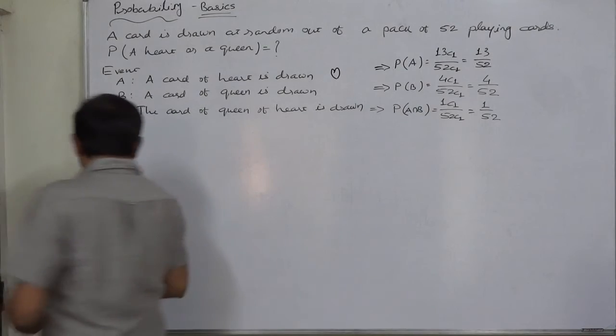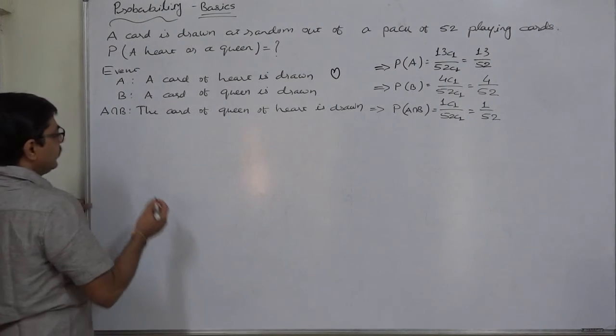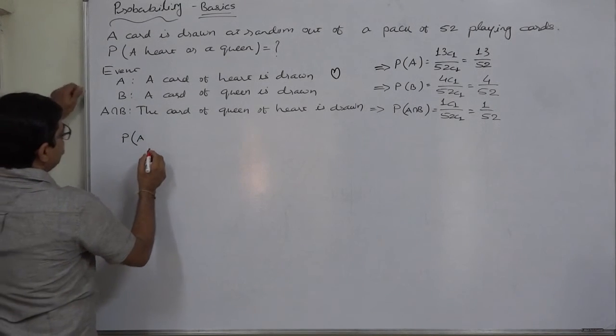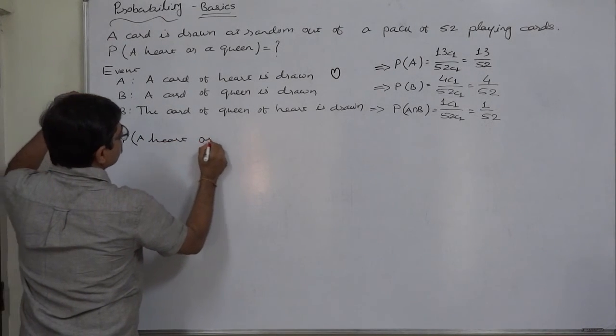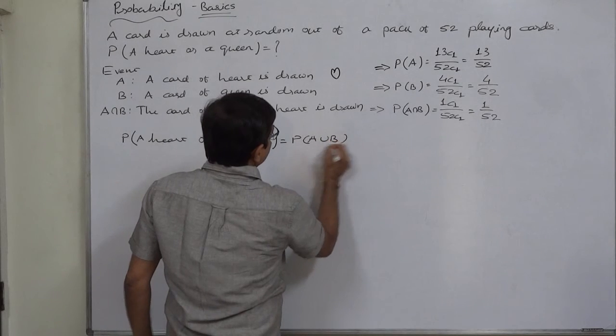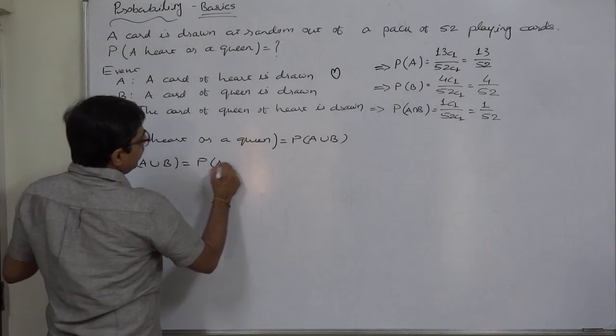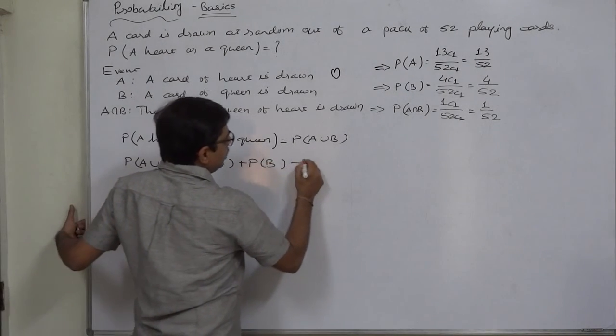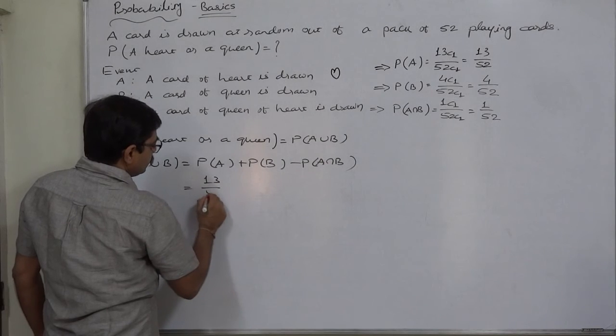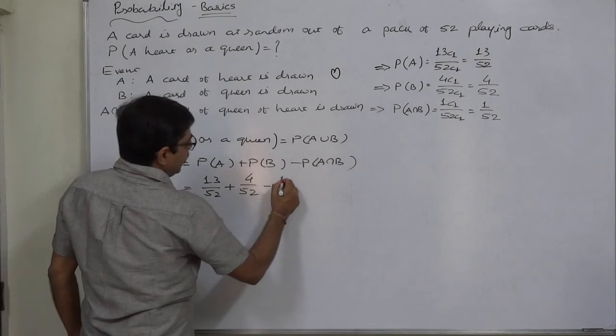Now the probability of the event, a card of heart or queen is drawn, can be found by using the general law of addition of probabilities. P of A union B equals to P of A plus P of B minus P of A intersection B. P of A is 13 by 52, plus P of B is 4 by 52, minus P of A intersection B.